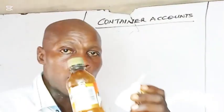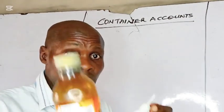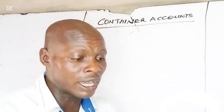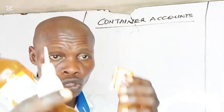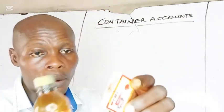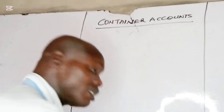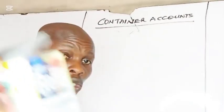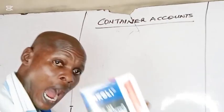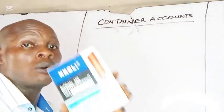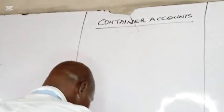This is an example of a container that is not returnable. Once you consume its content, you don't need to return it. For example, some pack blue, the matchbox — you don't need to return them after consuming their content. These are all examples of non-returnable containers.